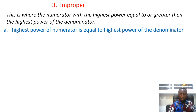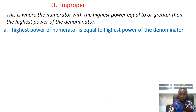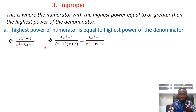If the highest power of the numerator is equal to the highest power of the denominator, it is an improper function. For example, (3s² + 4) over (s² + 3s) — you can see the highest power, s², is the same in both. Similarly, (s² + 1) over (s + 1)(s + 2): if you expand the denominator the highest power matches, so it is also improper.